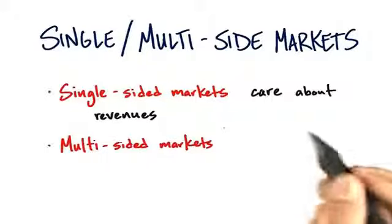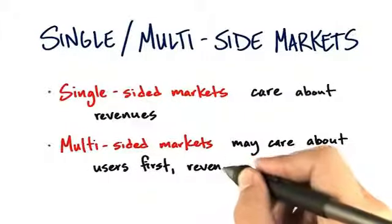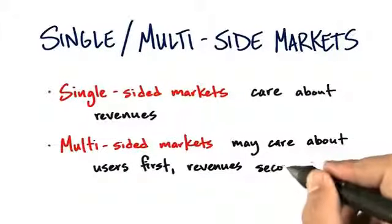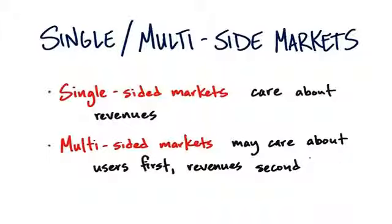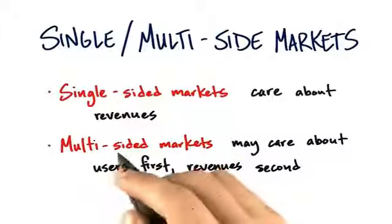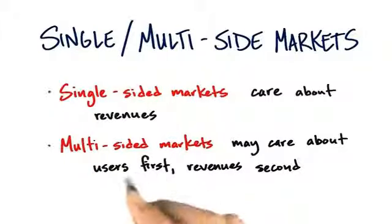But in multi-sided markets, there might be users, but there also might be very separate people who are payers. The example we keep using is Google, because everybody around the world has probably at one time or another been a Google user. When you use the Google search bar, you're one side of a multi-sided market — you're the user, but you're not the payer. You're not paying for the product, but in reality you're paying implicitly, because there is another side.